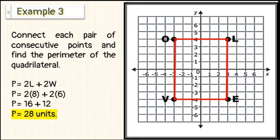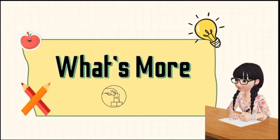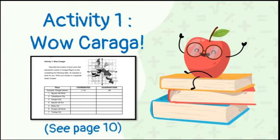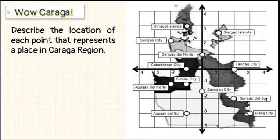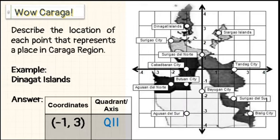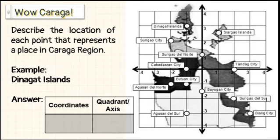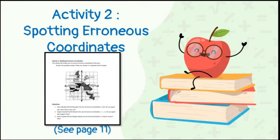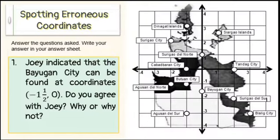Now that you have already learned the rectangular coordinate system, you are ready to answer the activities in What's More. In Activity 1, Guao Caraga, on page 10, you are going to describe the location of each point that represents places in the Caraga region. An example is done for you: the coordinates of Binagat Islands are (negative 1, 3) and its quadrant is quadrant 2. Write your answer in a separate sheet of paper. Activity 2, Spotting Erroneous Coordinates, see page 11. Answer the questions and write your answers in your answer sheet.